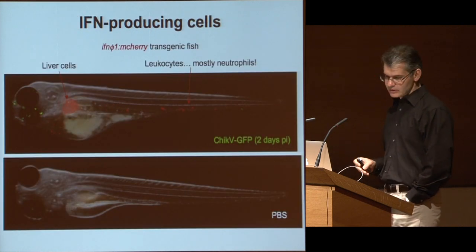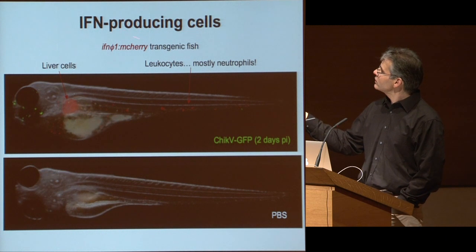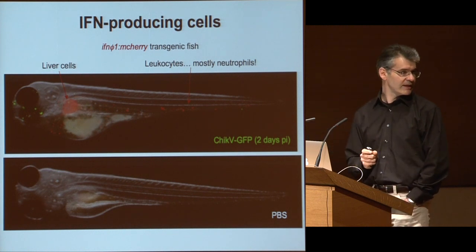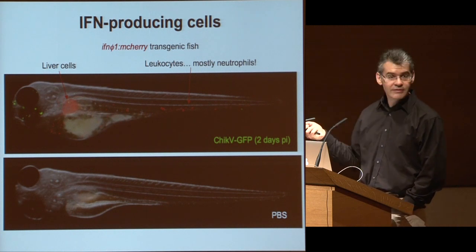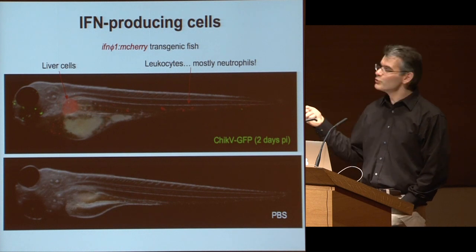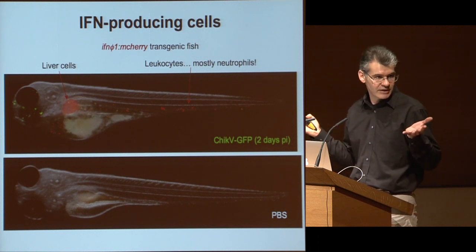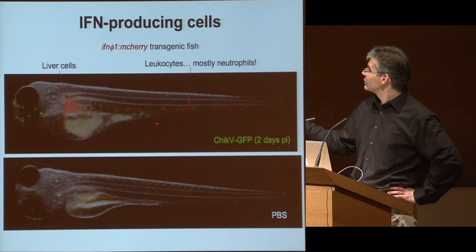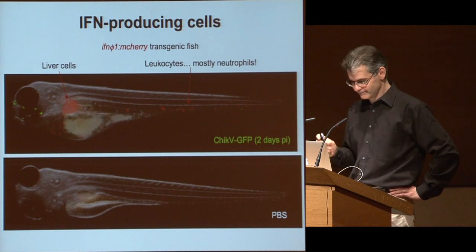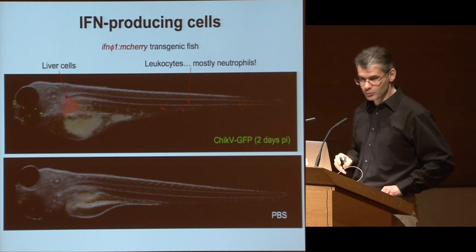We are now looking at this in more detail using a reporter transgenic line we developed, which is a reporter for interferon phi1 expression using mCherry. This reveals two populations of cells that express interferon: surprisingly, liver cells express high levels of interferon, and also a population of leukocytes. When we designed this transgenic line, we were hoping to find the equivalent of plasmacytoid dendritic cells — the cells that produce high levels of interferon in mammals. To our surprise, most of these leukocytes turned out to be neutrophils, which is really surprising. We are now performing specific depletion of these different cell types to understand the function of each population in the defense of the fish.